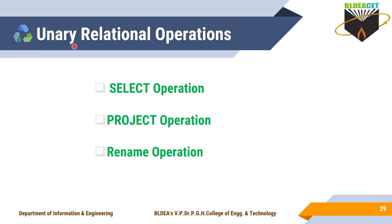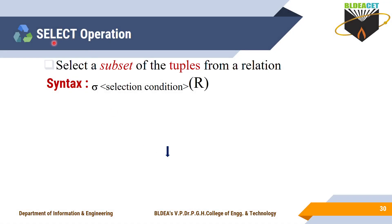Let's learn these one by one. We start with unary relational operations. In unary relational operations, there are three different types: the first is the SELECT operation, next is PROJECT, and next is RENAME. The SELECT operation is used to select a subset of tuples from a relation. As you know, a relation is in the form of a table, and rows in the table signify tuples.